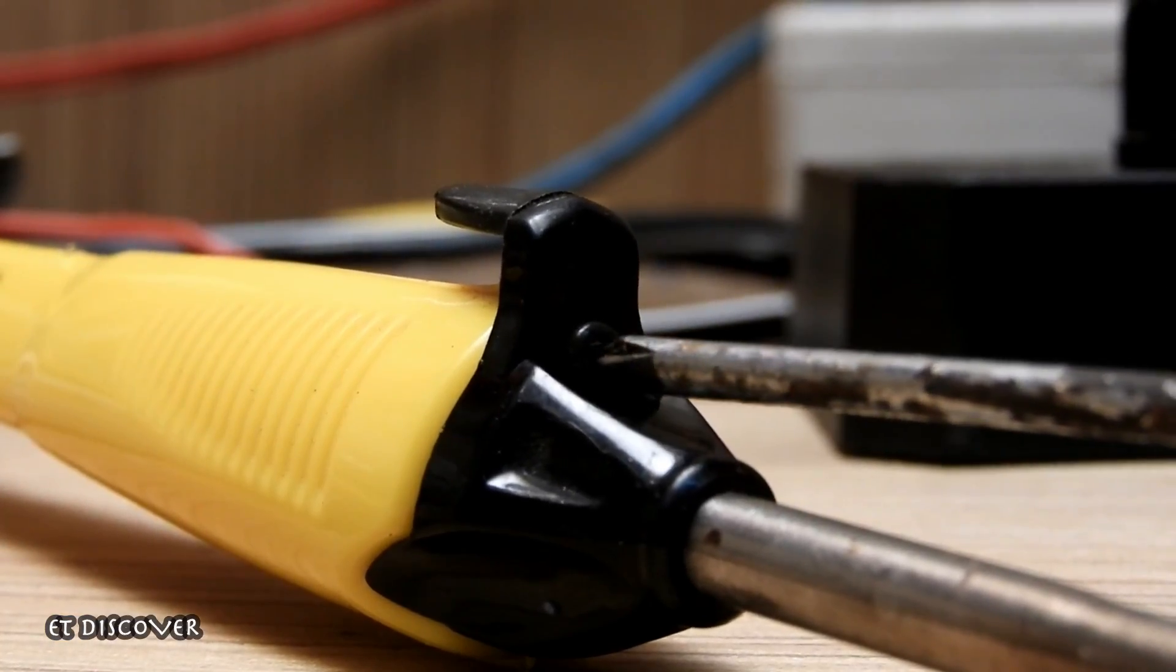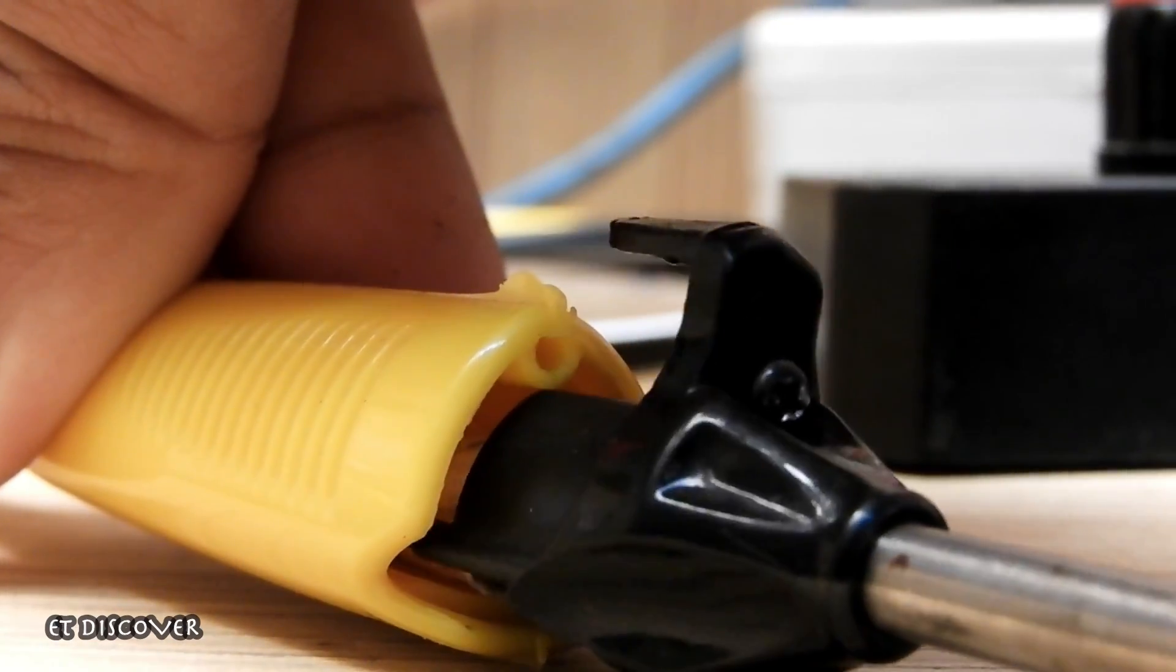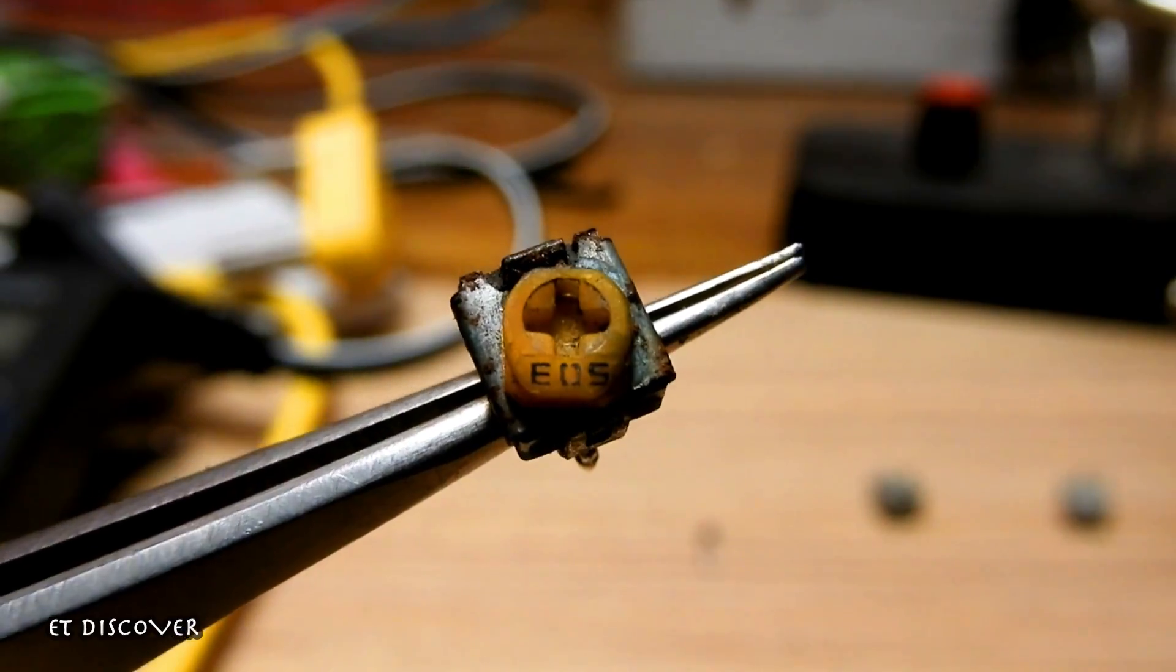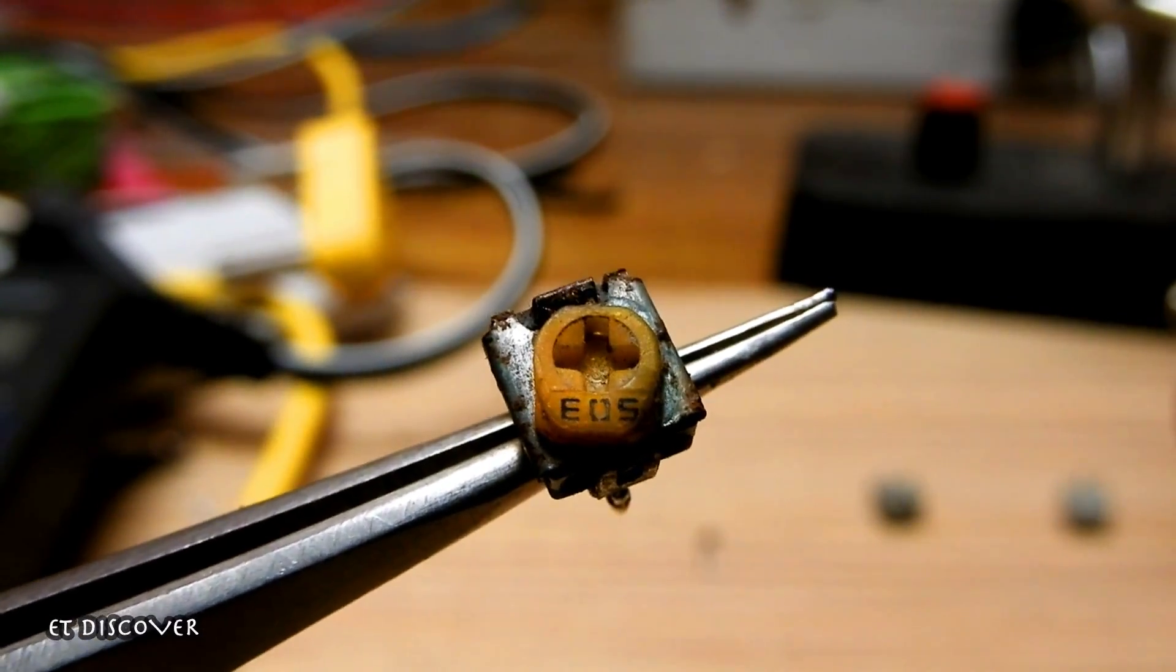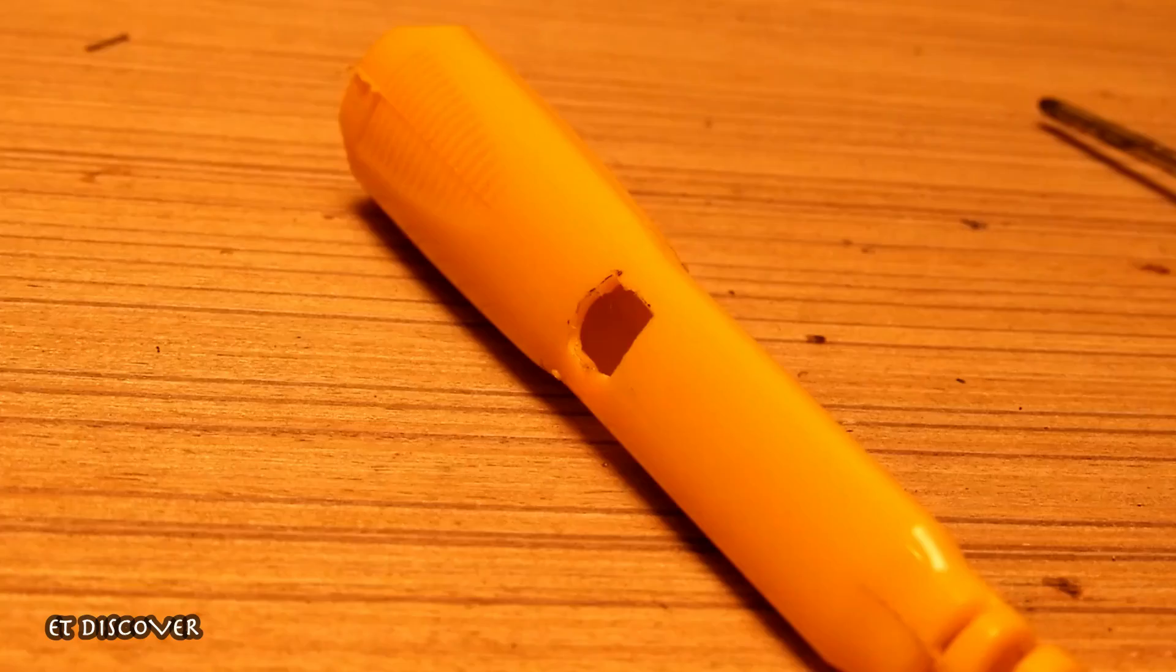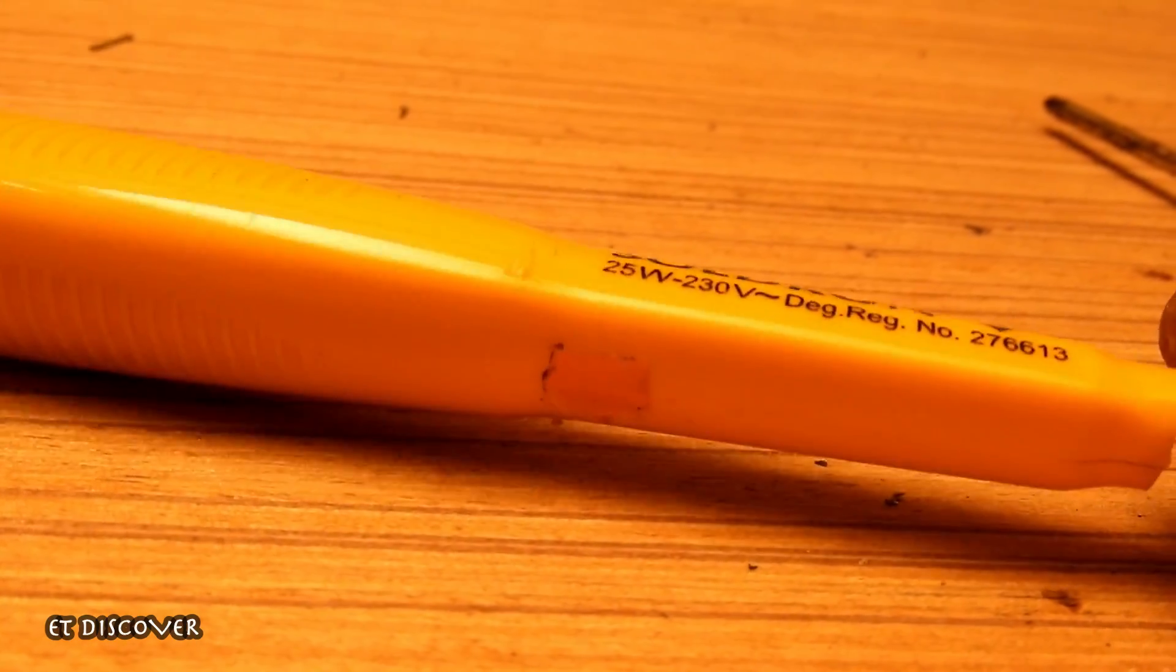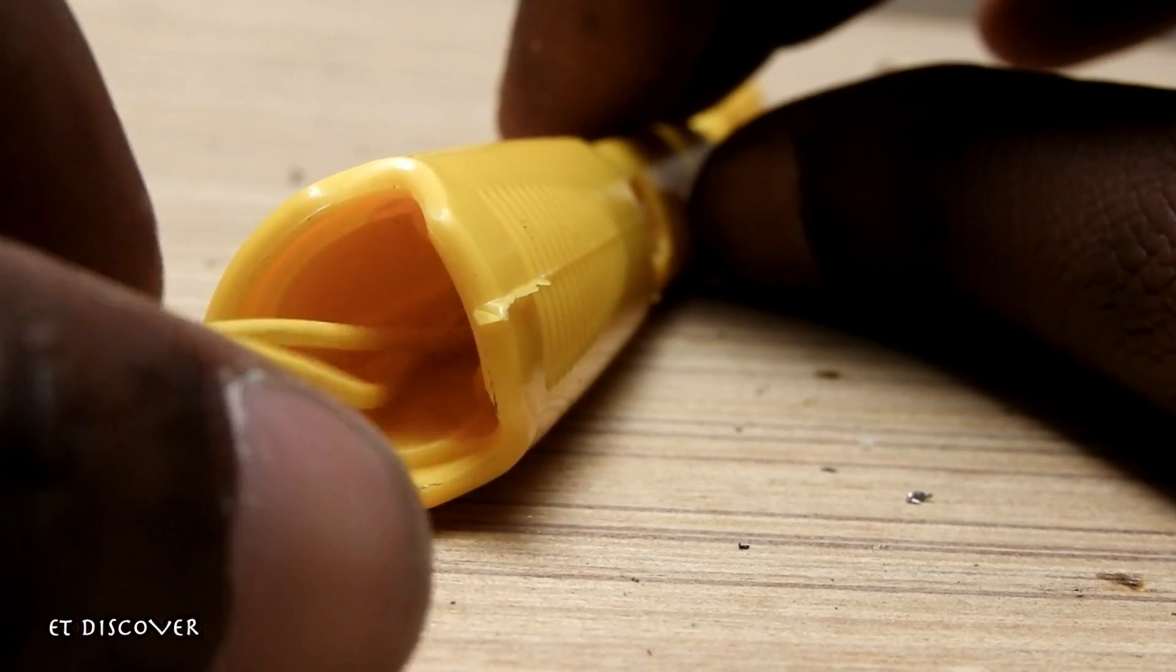Now I opened the soldering iron back cover and take a 100K preset. Note guys, don't use this type of preset because they don't have any rubber cover. I made a hole in the soldering iron of the size of this preset. So now I set the preset in the soldering iron.